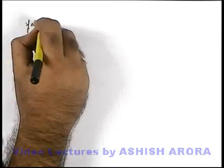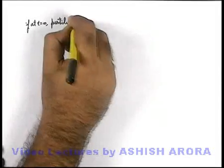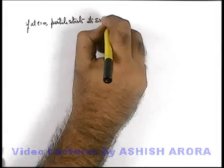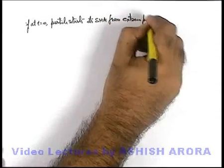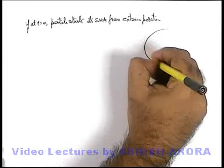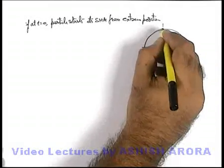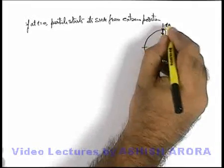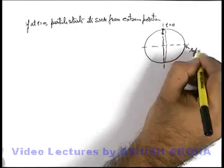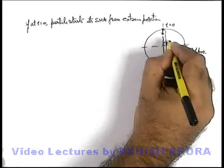Now we'll discuss the same sequence if at t equal to zero the particle starts its SHM from the extreme position. Here you can directly see if in a circle its projection is executing SHM and it is starting from extreme position and carrying out its oscillations. Then at t equal to zero, from the reference position on the circle, the angular displacement of the particle is pi by two.